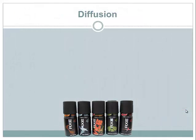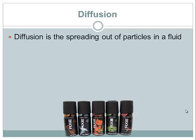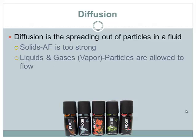Alright, moving on — today we're going to look at diffusion. In your lab tomorrow we're going to be looking at diffusion in terms of particle motion and how particles spread out. When we talk about the spreading out of particles in a fluid, we're referring to liquids or gases. Solids don't undergo diffusion because their attractive forces are too strong and they have a definite shape. In liquids and gases, the particles are allowed to flow and move about randomly through Brownian motion, which explains that random movement.